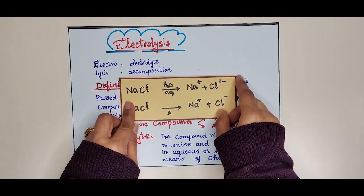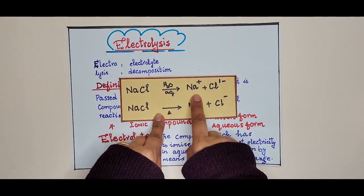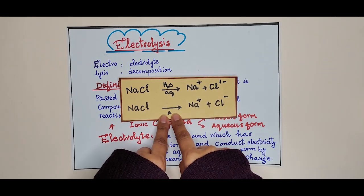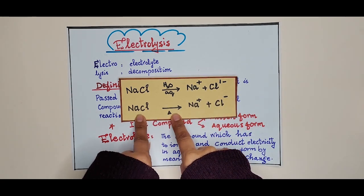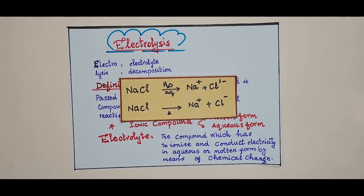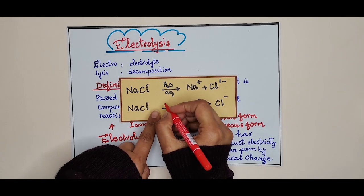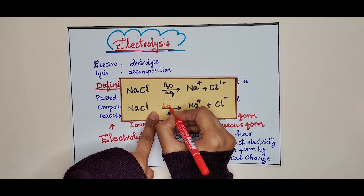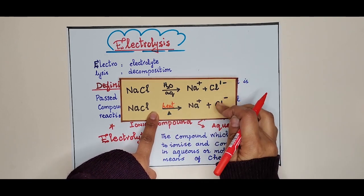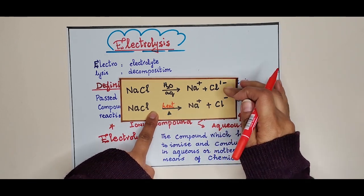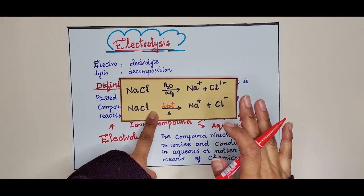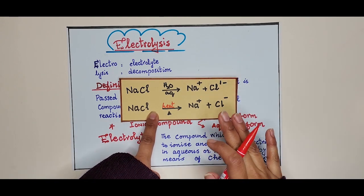In aqueous form, sodium chloride produces sodium and chloride ions. When sodium chloride is heated and melted, it also becomes ionized. These ions are then responsible for the conduction of electricity in electrolysis.